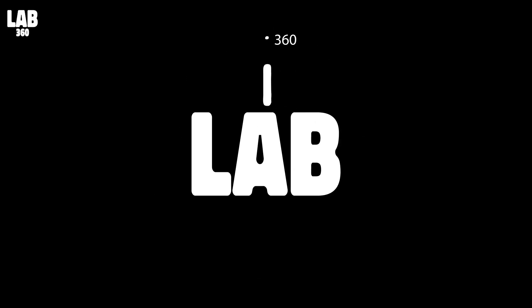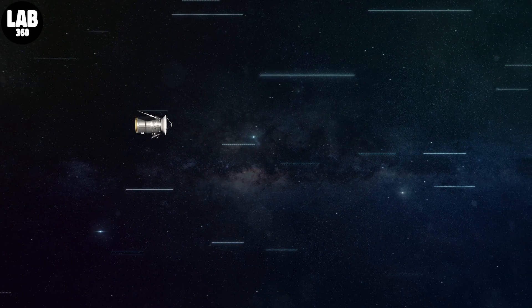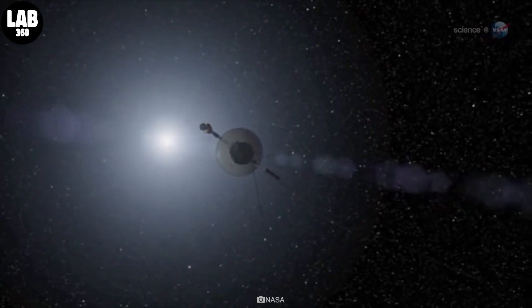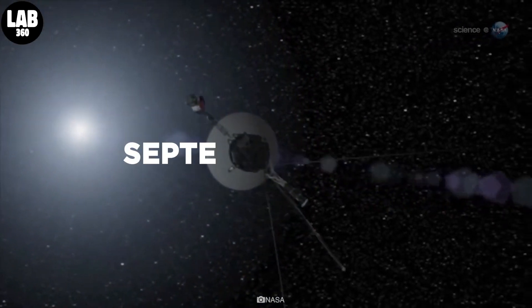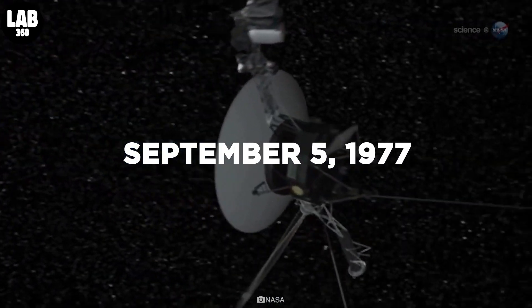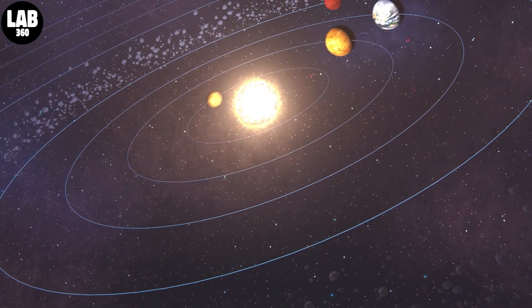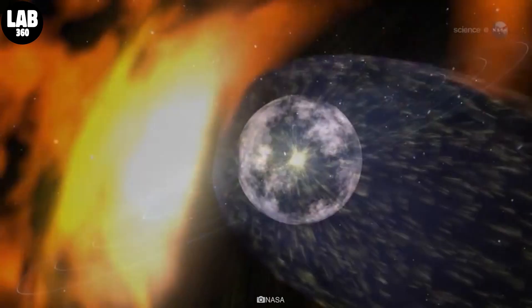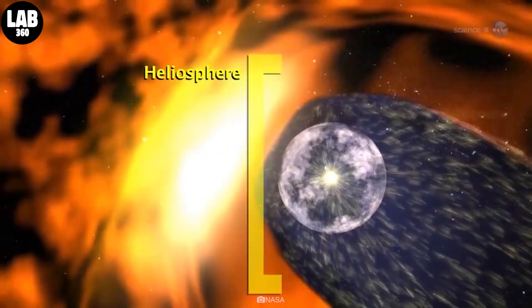Welcome to Lab 360 for all the news and videos from the world of astronomy. Voyager 1 is a space probe launched by NASA on September 5, 1977, as part of the Voyager program to study the outer solar system and interstellar space beyond the sun's heliosphere.